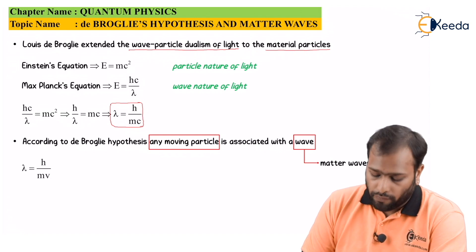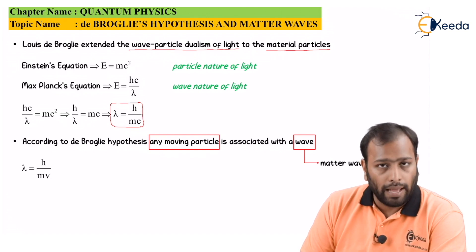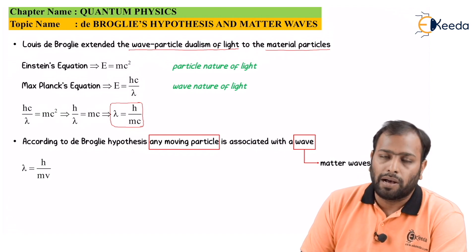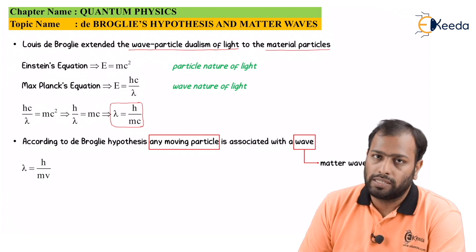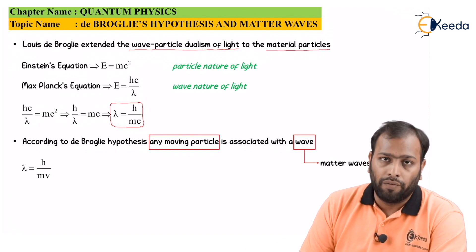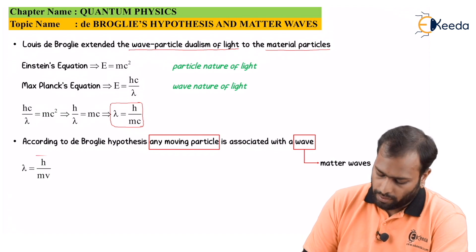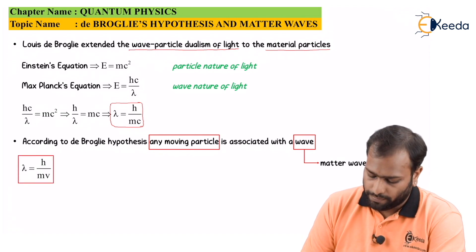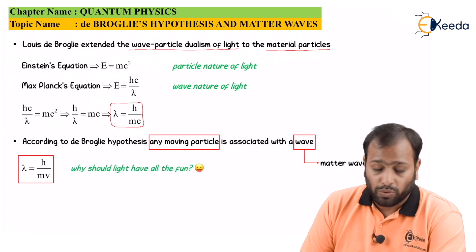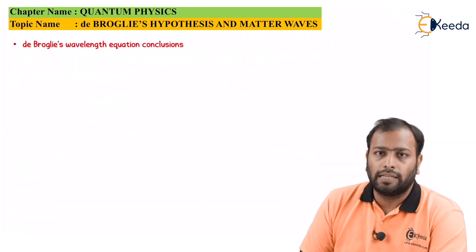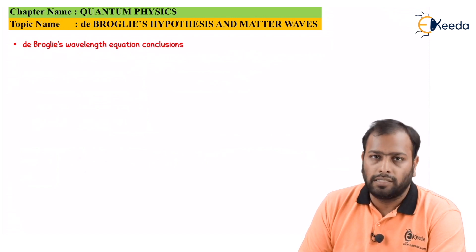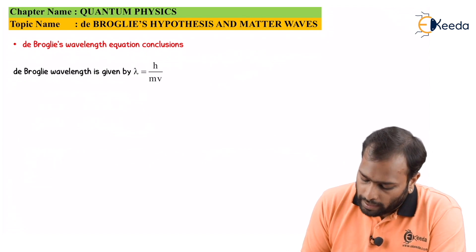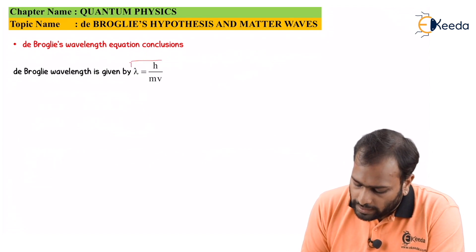De Broglie changed the equation from λ = h/mc to λ = h/mv for real world objects. Basically, if my mass is m and I am moving with velocity v, I will have a wavelength corresponding to λ. This is De Broglie's hypothesis equation. Now let's consider the De Broglie equation and jump to certain conclusions.